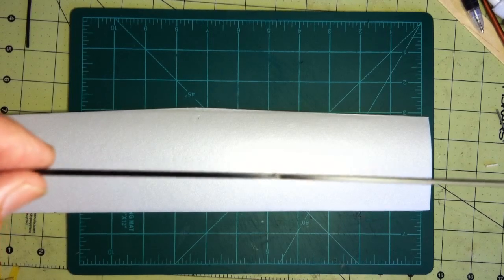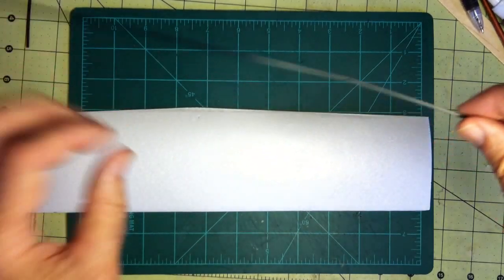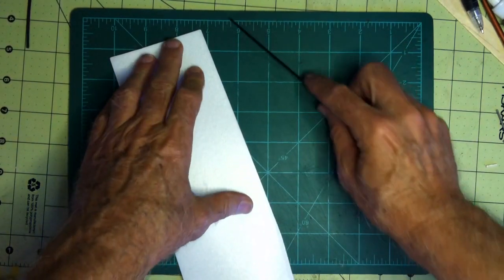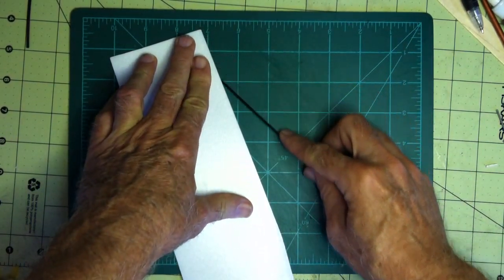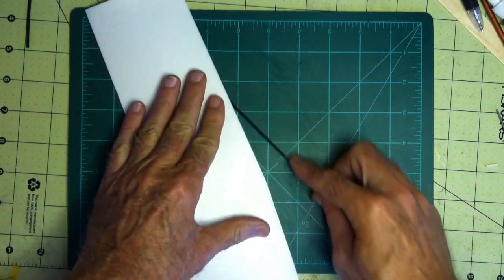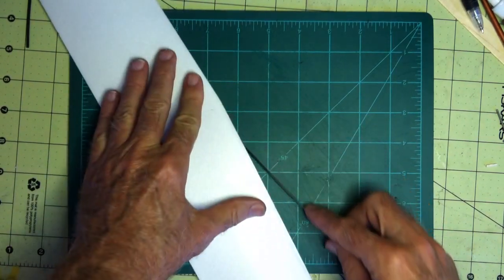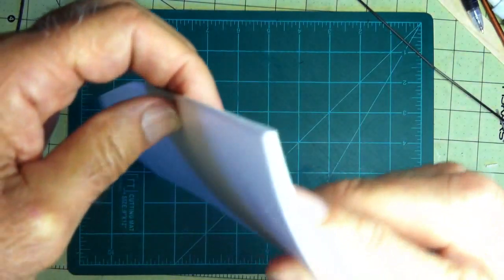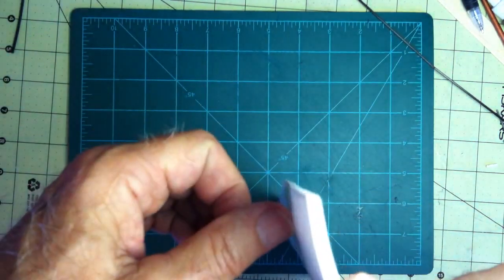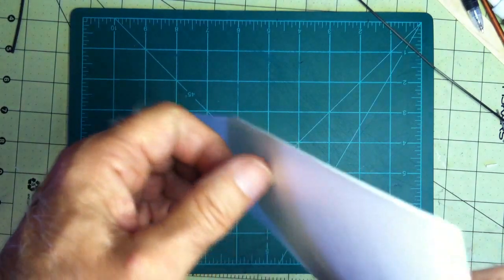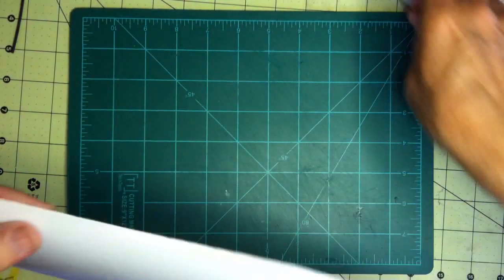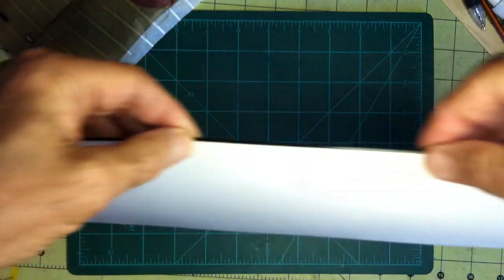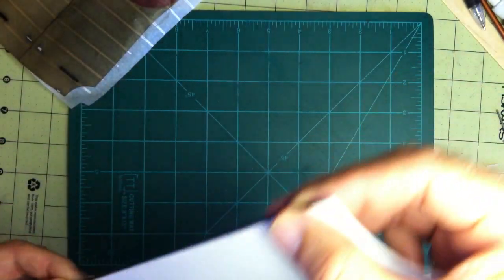And then the next thing I did was with the leading edge, I took the rod and ran it along the leading edge several times like this in order to put a trough in it, into which the carbon fiber rod will fit when I glue it in. So it'll be something like this.